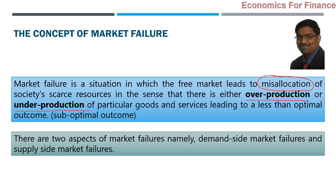Failure does not mean we dismantle and throw away the market — we cannot do that. Somehow we have to rectify it. For example, if any part of the body has a problem, we don't cut it off; some medicine has to be given so that part is healed. Who gives that medicine? The government. What kind of medicine it will give, we will discuss later. But first, we should identify the problem. This is basically a chapter where we are diagnosing the reasons for market failure.